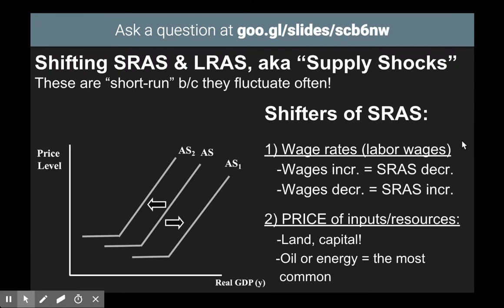The first shifter is wage rates — what you pay your workers, for example minimum wage. Just like old school supply, if wages increase or minimum wage increases, then businesses have to pay their workers more money, which means they are spending more on labor and less on buying resources or actually producing the product. So if wages increase, aggregate supply would shift to the left — on this graph from AS to AS2 — because you can produce fewer goods and services.